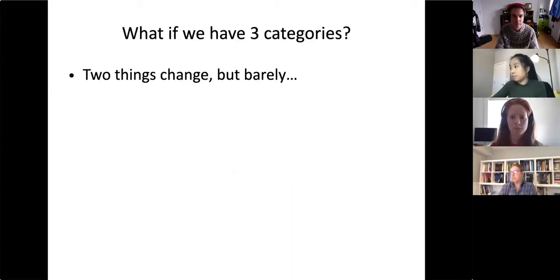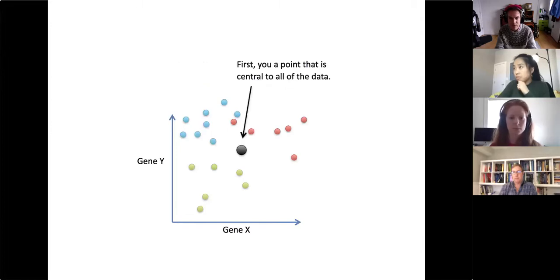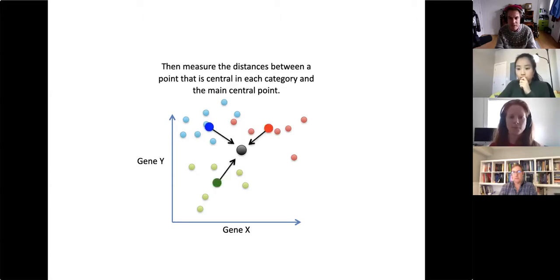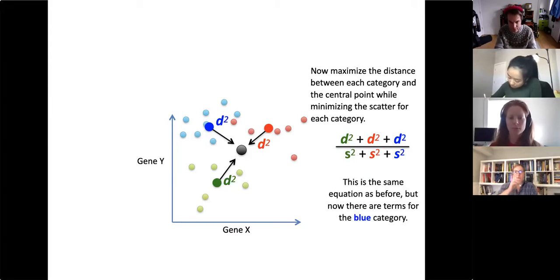What if we have three categories? Two things change, but just barely. With three categories — green, red, and now blue — the first difference is how you measure distances among the means. You find a point that is central to all the data, then measure the distances between each category's central point and the overall central point. We then maximize the distance between each category and the central point while minimizing the scatter in each category — we maximize the same ratio, now with terms for the blue category too.